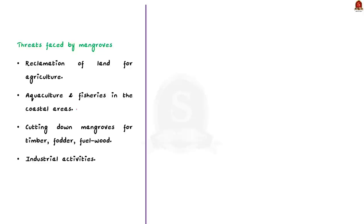The first threat is reclamation of mangrove land for agriculture. The second is the presence of aquaculture or fisheries in coastal areas that obstruct tidal flow and sediment flow. Third, mangroves are cut down for timber, fodder, and fuel wood. The last major threat is the increase in industrial activities and discharge of untreated waste in mangrove areas. To address these threats and increase mangrove cover, the government has taken steps, the most recent being the MISTHI program.